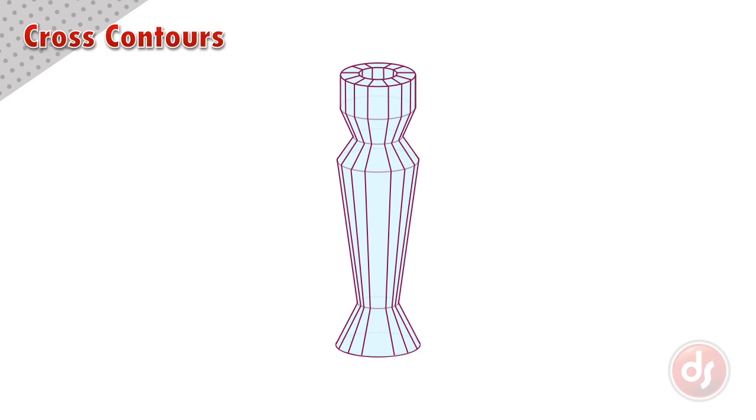Also notice the angles of the cross contours get flatter the closer they are to the center of the object. And if I were to add a cross contour going down the center, it would be a straight line because it's directly in front of our viewpoint. Making the cross contours closer towards the edge and flatter in the middle helps define a curved surface.